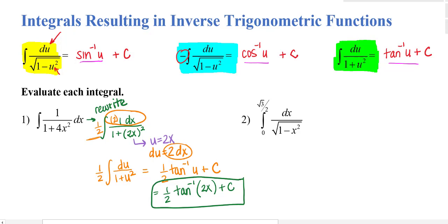You can always check your indefinite integrals by taking the derivative of that function and making sure that you get the original integrand. The second one is a definite integral. And so we're trying to integrate dx over the square root of 1 minus x squared. That is just, in fact, inverse sine of x.